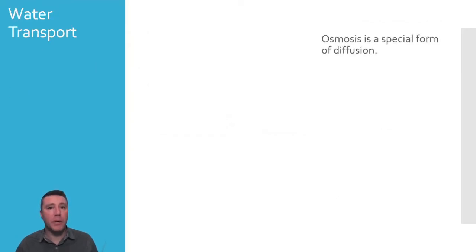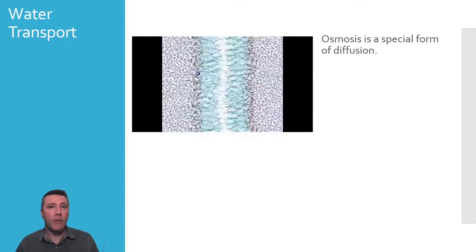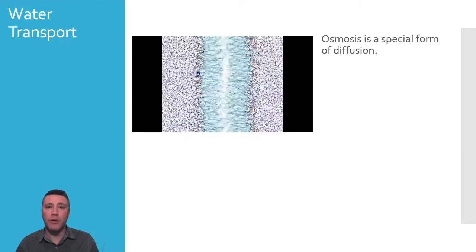Osmosis is a very special type of diffusion. While simple diffusion refers to the movement of solutes across a membrane, osmosis is the diffusion of the solvent. As you can observe in this computer animation, water molecules travel across the membrane with relative difficulty.